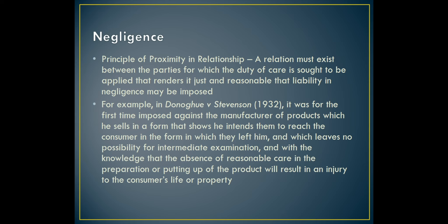In Donoghue versus Stevenson, the principle of proximity in relationship was expounded: a relation must exist between the parties such that it renders it just and reasonable that liability in negligence may be imposed. In that case, since the manufacturer sold the drink in such a form that nobody else — not the transporter, not the shop owner — could interfere with or verify its condition, it was held there was proximity in relationship between the consumer and the manufacturer. As a result, the manufacturer had a duty of care to ensure the drinks were in such a condition as they could be directly consumed after opening the bottle.